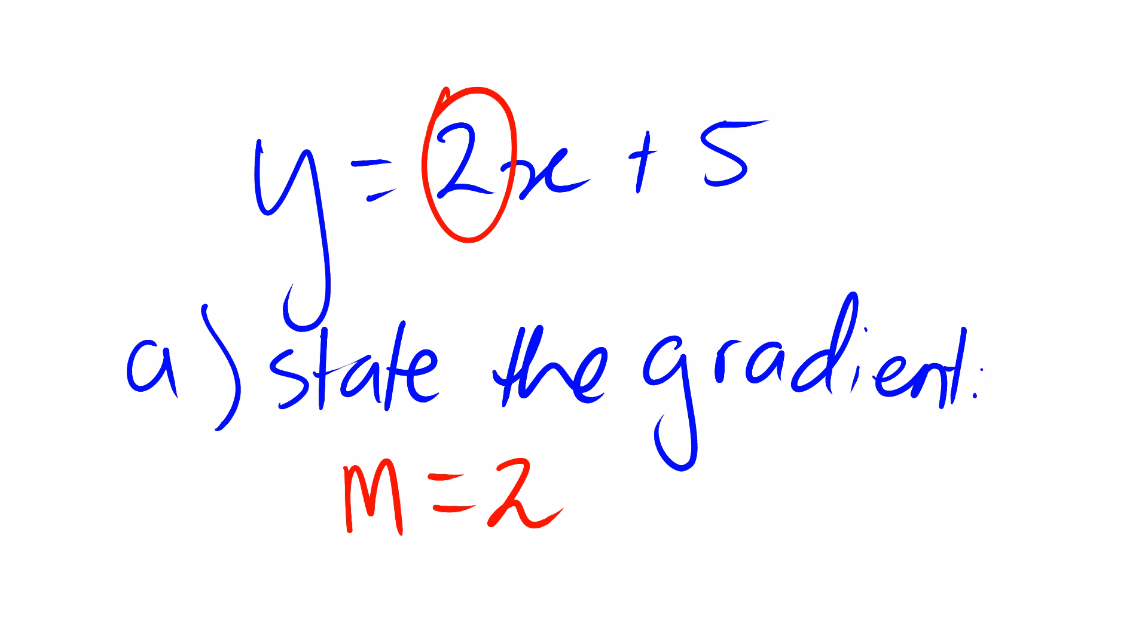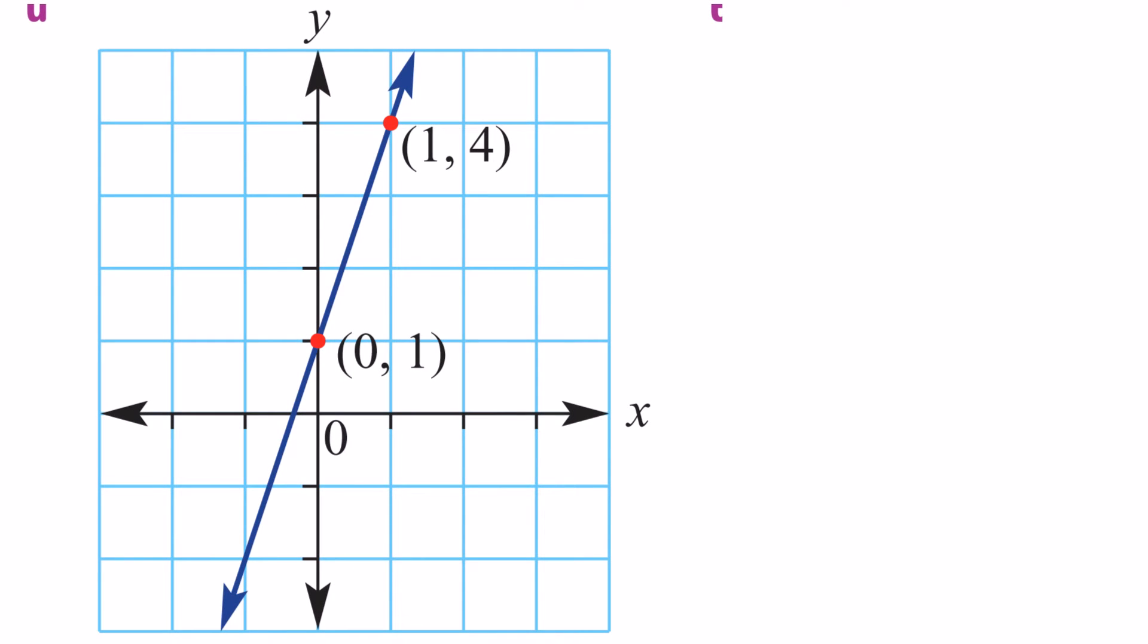Now, alternatively, you may be asked to find the gradient if you've already been given a straight line. So coming up on the screen here should be a straight line. We have a straight line that's running through the coordinates 0, 1, and running through the coordinates 1, 4. So in order to find the gradient of this line, we have to measure the slope. We have to measure the slope of the line.